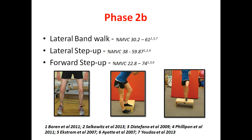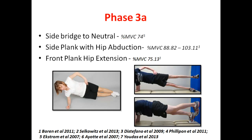The next exercise is the step up, both to the side and to the front. In the final phase of mat-based exercises we have three exercises: side bridge to neutral, side plank with hip abduction, and front plank with hip extension. All of them require good core control, and the key thing is to ensure the spine is in neutral with no excessive lordosis.